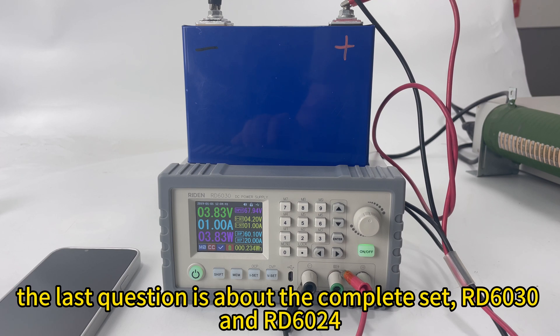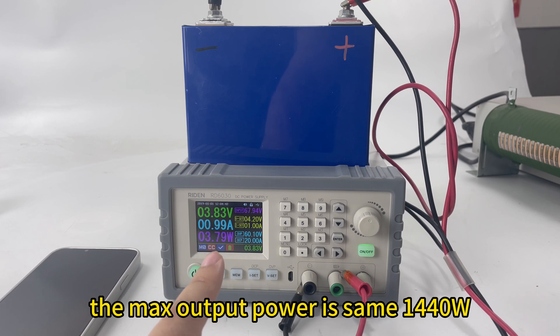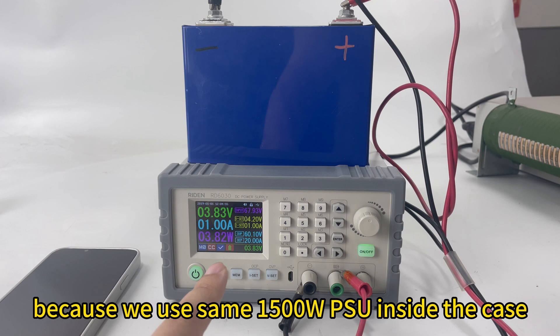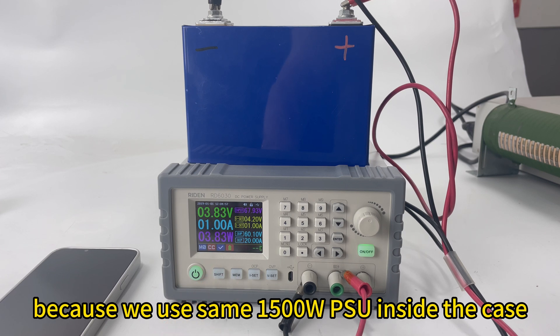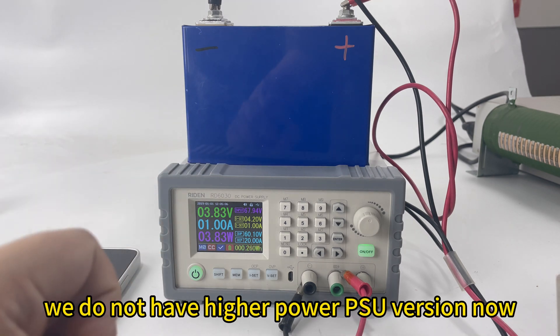The last question is about the assembled set. For RD6030 and RD6024, you see the max output as they are seen. It is 1440 Watt. The reason caused this output power is that we use 1500 Watt PSU inside the device. We do not have higher power PSU because for now we do not make them.